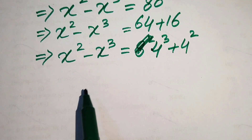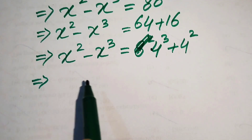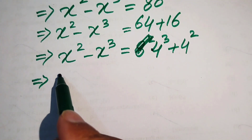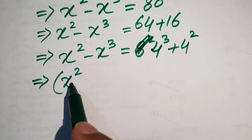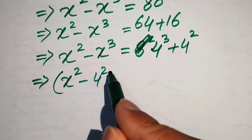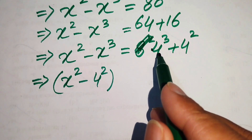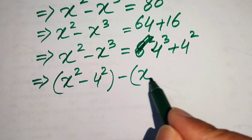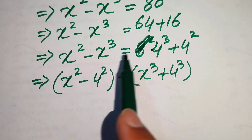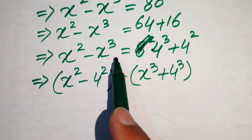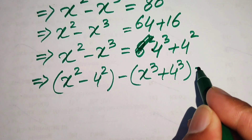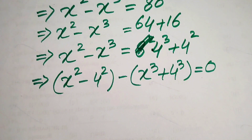Now we move terms from the right-hand side to the left-hand side, pairing square terms with square and cubic terms with cubic. The first square term is x squared, and moving 4 squared gives minus 4 squared. Moving 4 cubed gives x cubed plus 4 cubed. Taking out a common minus sign from the cubic terms, we get: (x squared minus 4 squared) minus (x cubed plus 4 cubed) equals 0.